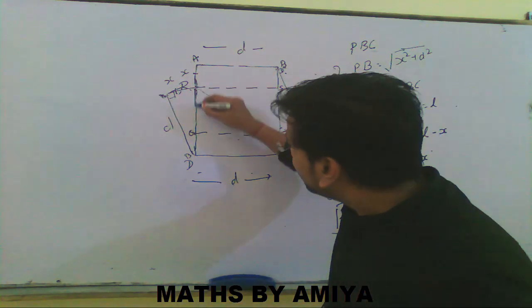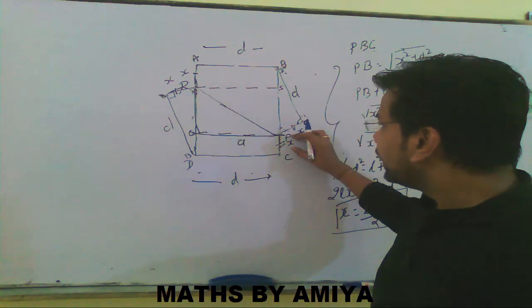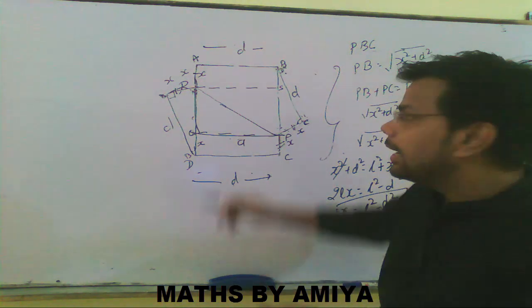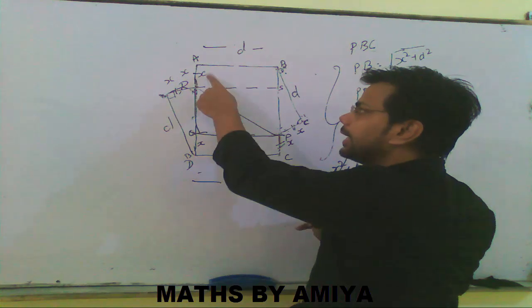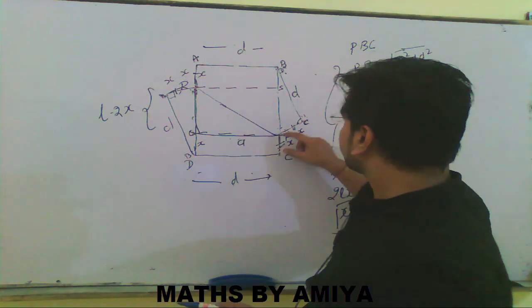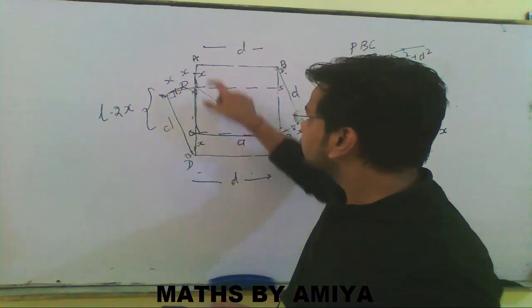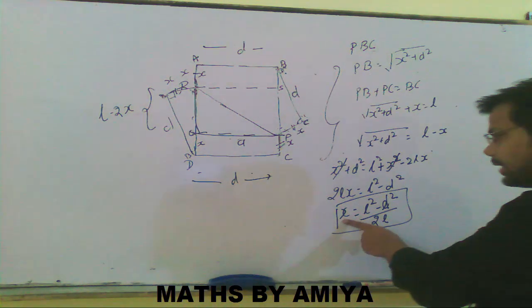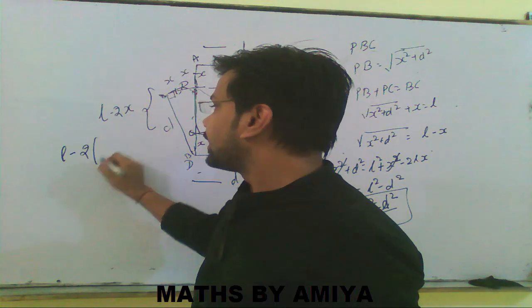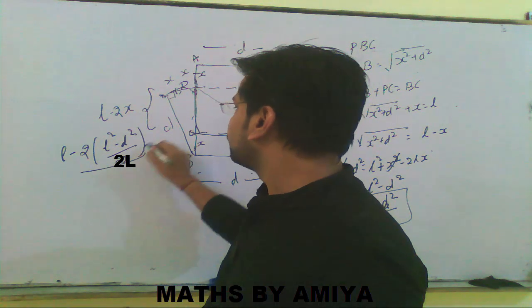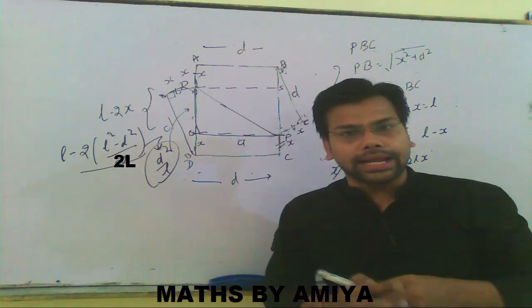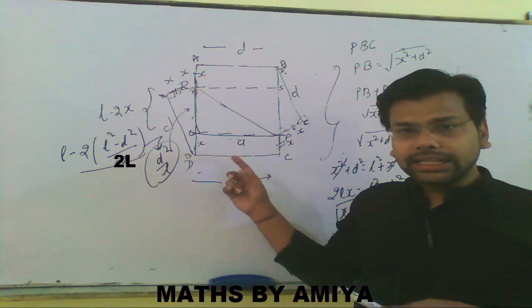We need to find QR. We know the base is d. This length is x, and by symmetry this one is also x. The complete length is l, so the smaller middle length QR = l − 2x. Substituting x = (l² − d²) / 2l, we get QR = l − 2·(l² − d²)/2l = l − (l² − d²)/l = d²/l. So QR = d²/l and the base = d, and from these we find the length of the crease.